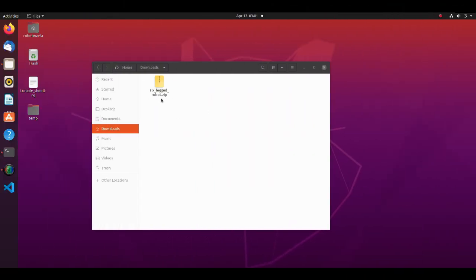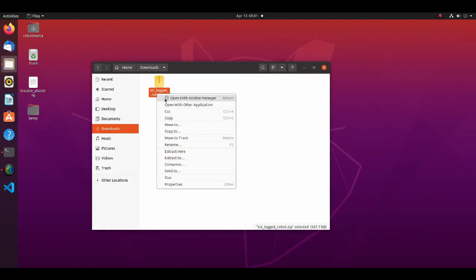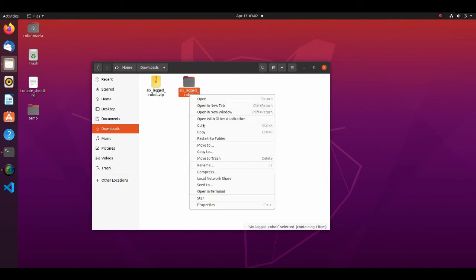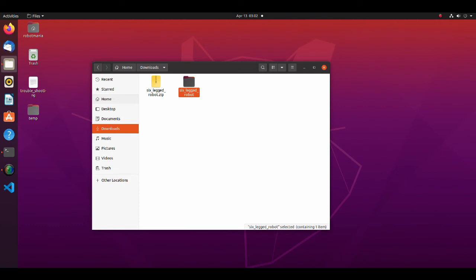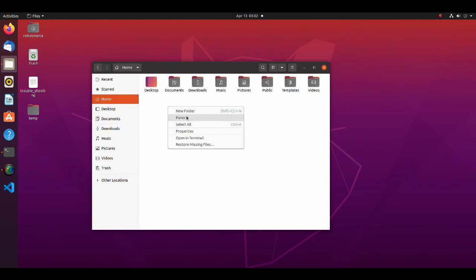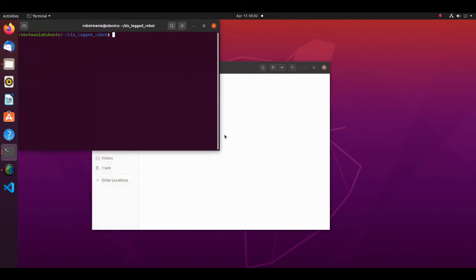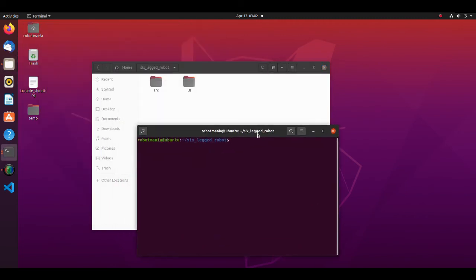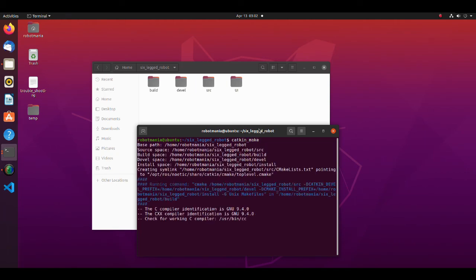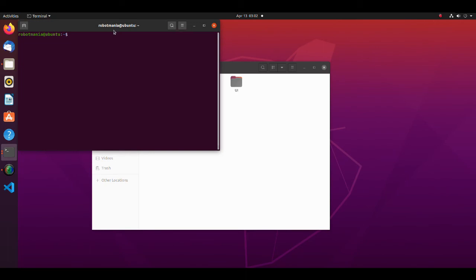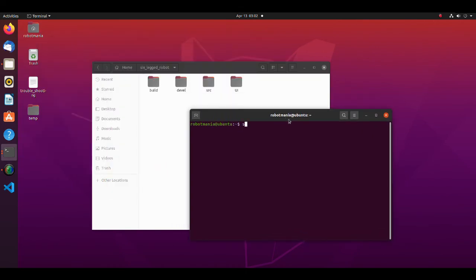Download the zip file from google drive. Extract project files. Move six-legged robot folder to home directory. Move to six-legged robot directory, open a new terminal and execute catkin make command.